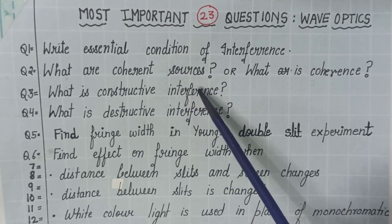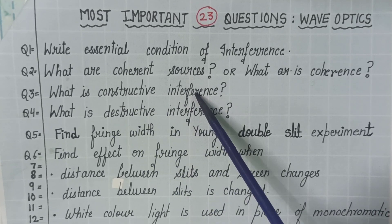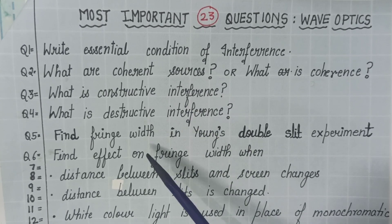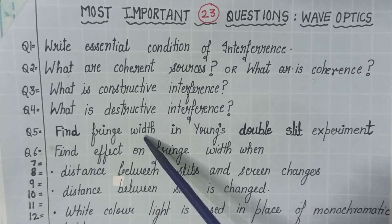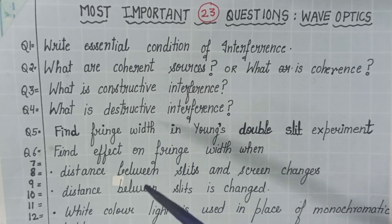What is constructive interference or state condition of constructive interference? Very important. What is destructive interference or state condition of destructive interference? Then, find fringe width in Young's double slit experiment. That means it is a derivation.